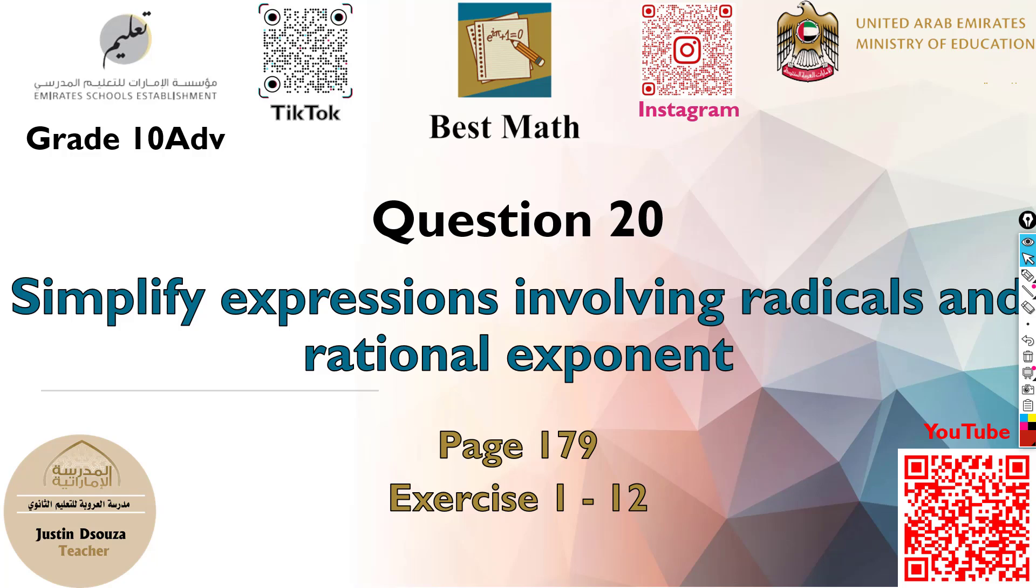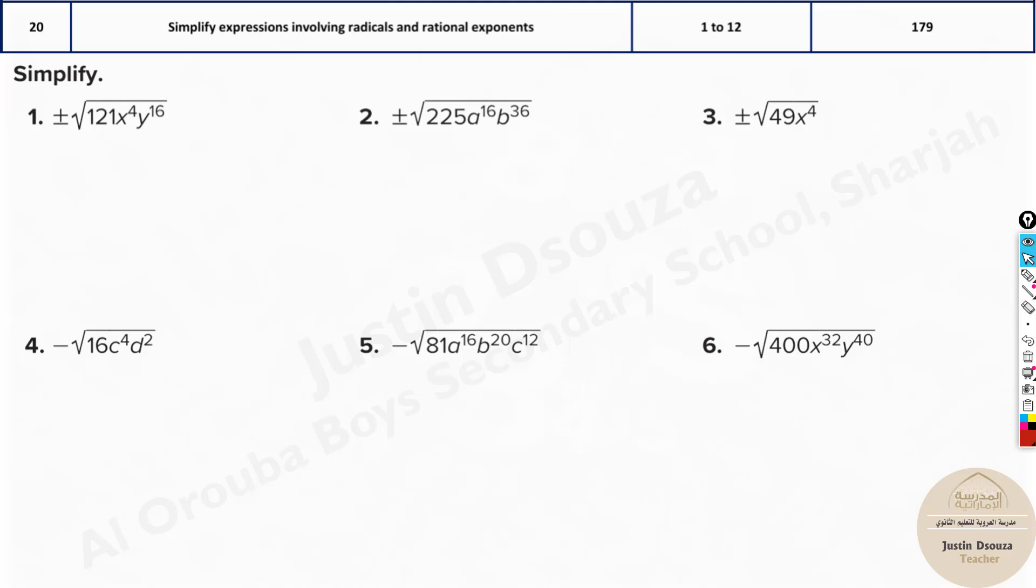The last question in the writing part, question number 20, is to simplify expressions involving radicals and rational exponents. These are very simple type of questions. You have to solve the square roots, or it might be cube root or different exponents.